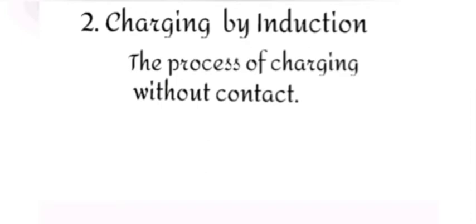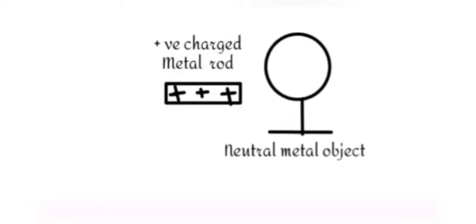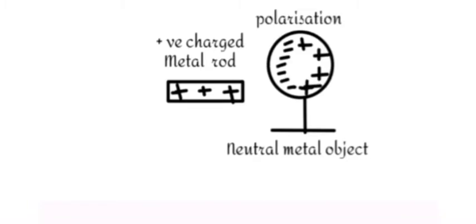The second method of charging is charging by induction. The process of charging without contact is called induction. Let's assume we have a neutral metal object on an insulating stand. If a positively charged rod is brought near the metal object on an insulating stand, we will see polarization of charges happen.